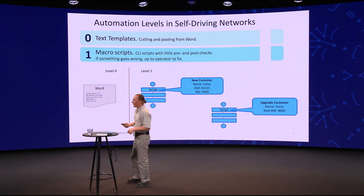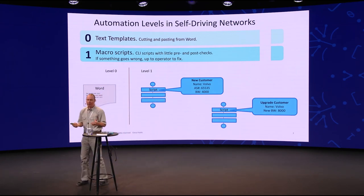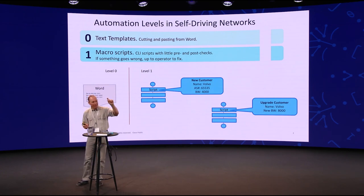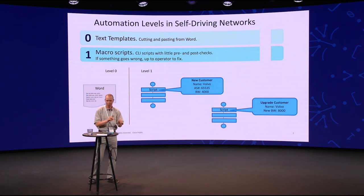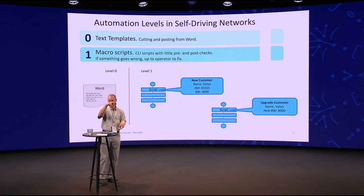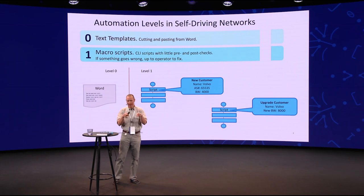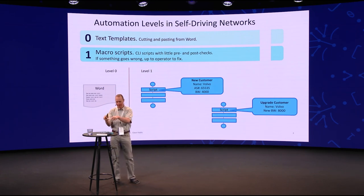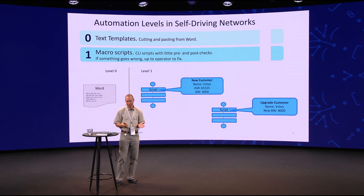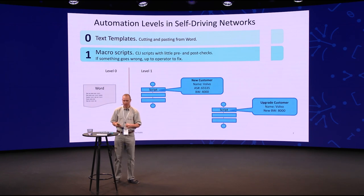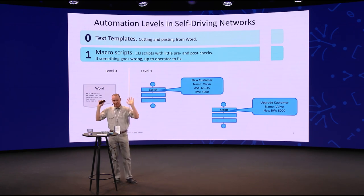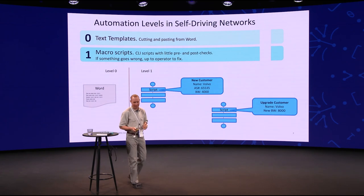Level one: you have taken those MOP documents and turned those little snippets with placeholder variables into small scripts that you can run individually. Instead of copying and pasting, you're still looking at page 558 in the MOPs document, but it tells you the name of the script to run and what the arguments are — the AS number, the customer name, whatever. Those scripts are more or less just doing the pasting. If something goes wrong, it's up to you. That's level one.